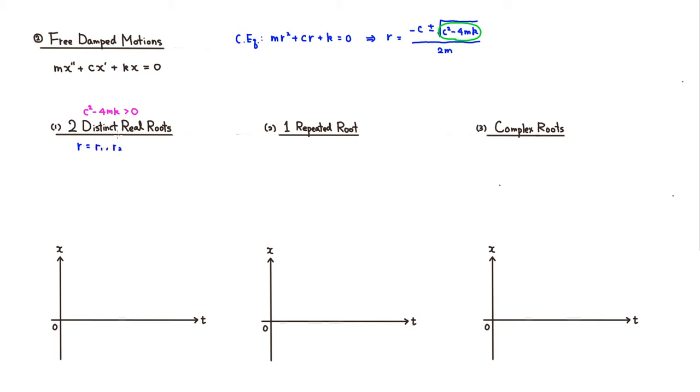So the solution is going to look like this, so x of t is going to be a linear combination of e to the r1t and e to the r2t. You'll notice that this is going to be a negative value, so you're going to have e to the negative number t, so it's a decreasing exponential function.